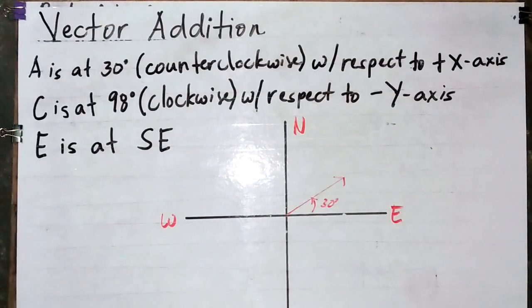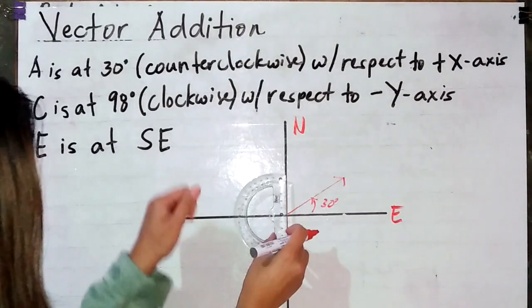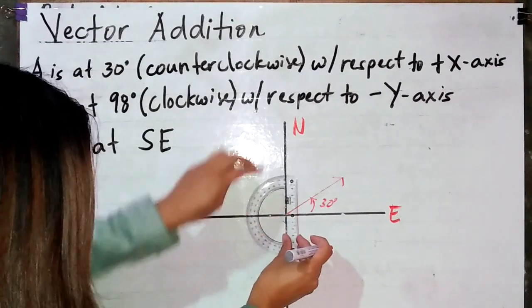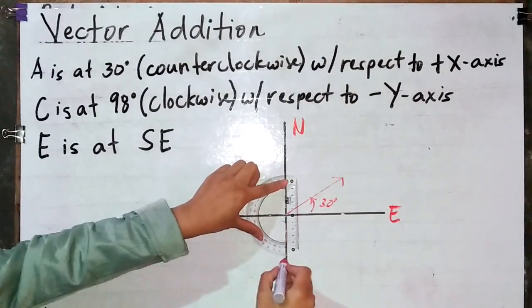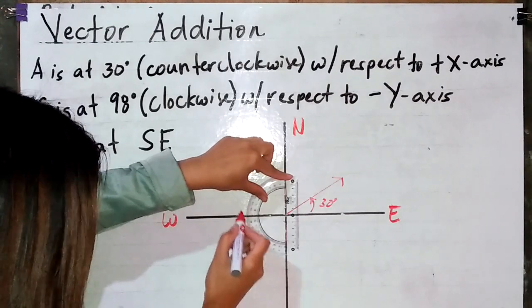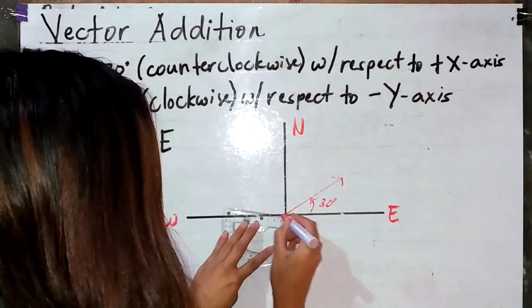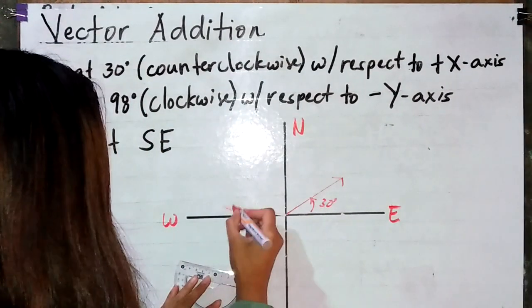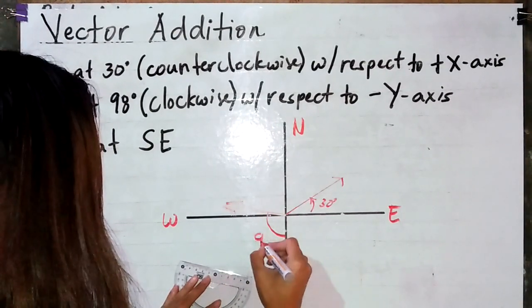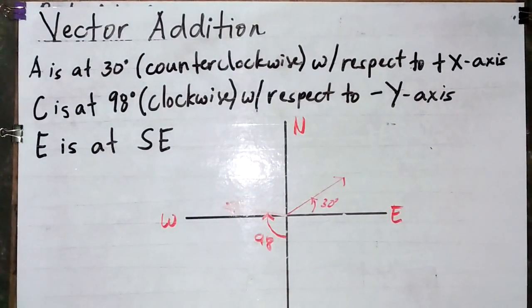Vector C is at 98 degrees clockwise with respect to the negative y-axis. The negative y-axis is in the south. We place the protractor there, and since it is clockwise, we start going upward. We measure 90 degrees, then continue to 98 degrees. This is our 98 degrees, clockwise with respect to the negative y-axis. Don't forget the arrow.